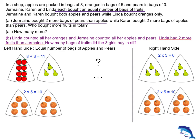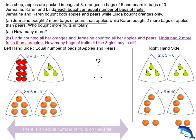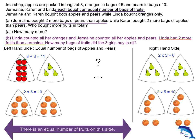Coming back to the question: Linda had 2 more fruits than Jermaine, but on the right-hand side there are 4 extra. On the left-hand side there must be an equal number of fruits. After taking out the 2, there are 2 extra oranges, and these 2 extra oranges go over to the left-hand side to make up for the shortfall. Every time 1 orange is used, there are 2 bags. So with 2 oranges, I have 2 times 2 — 4 bags on the left-hand side.